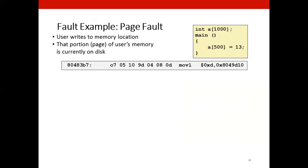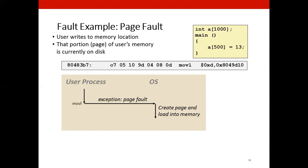Here is another example of the fault synchronous exception. An exception that happens due to something that an instruction does. So here we have a code and we want to write into a location. But the portion of that memory is not in the RAM. This page is on the disk.